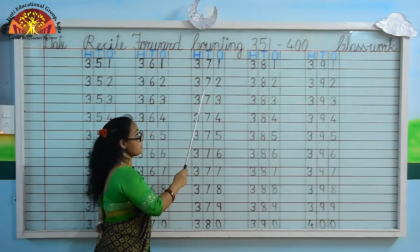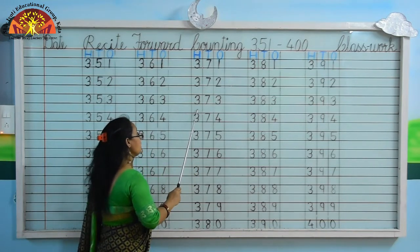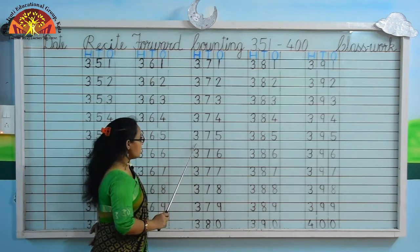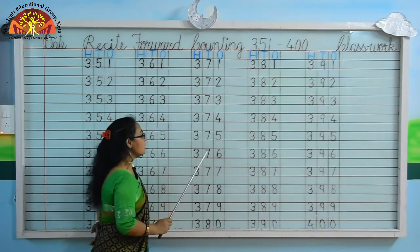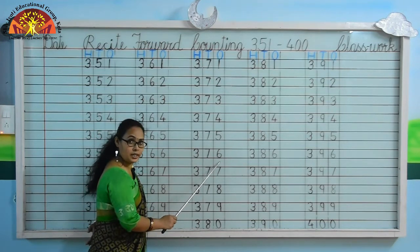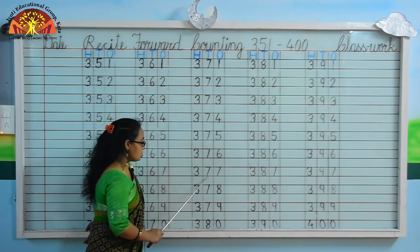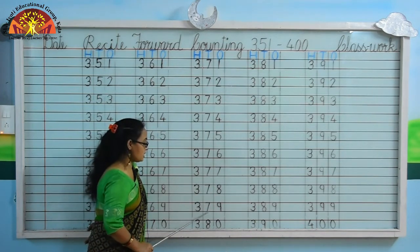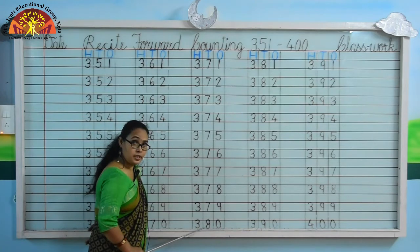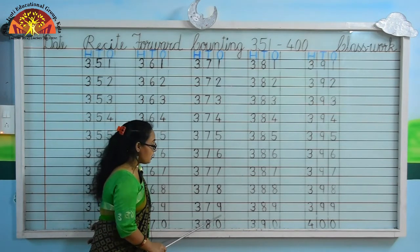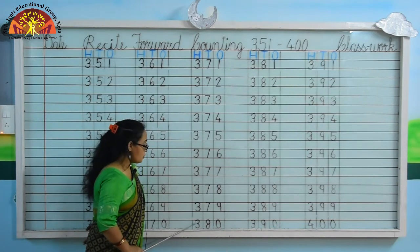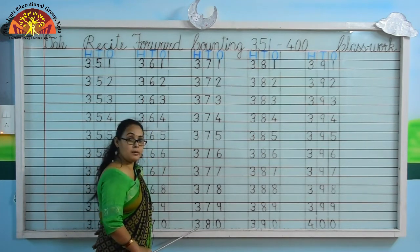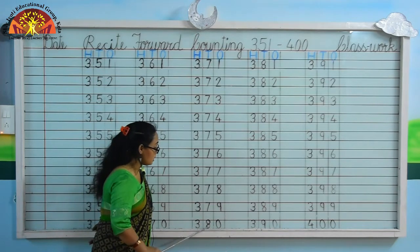371, 372, 373, 374, 375, 376, 377, 378, 379. Yes kids, what comes after 379? Yes, 380. Now you tell me, what comes after 380?